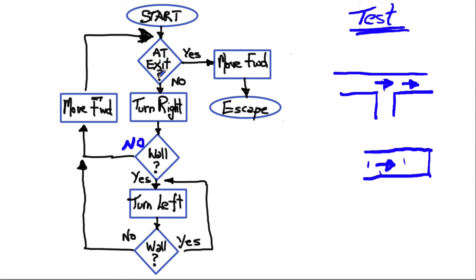Am I at the exit? No. I'm going to turn right down here. Is there a wall? Yes, there is. So I'm going to turn left. That means I'm going to turn back this way. Is there a wall? No. I'm going to move forward. So now I'm into here. Turn right. I'm down into here. Is there a wall? Yes.